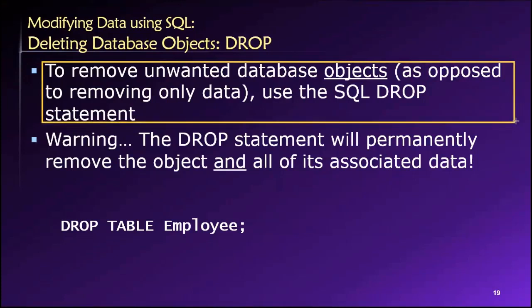If we drop a table, not only will that delete all of the data in the table, but the structure — the table itself — will be removed. Similarly, we can drop constraints. If we're establishing a relationship between tables and we want to get rid of that relationship, we can use the drop statement.